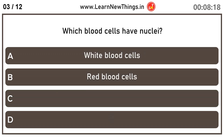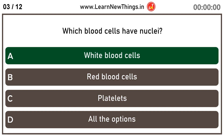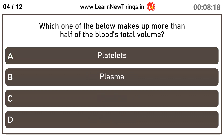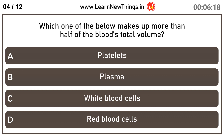Which blood cells have nuclei? White blood cells. Which one of the below makes up more than half of the blood's total volume? Plasma.